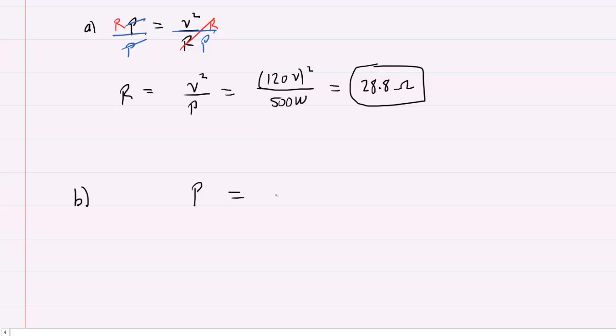We know that power is equal to current times potential difference. Divide both sides by the potential difference, so current equals power divided by potential difference. Let's plug in 500 watts for power and 120 volts for potential difference. Computing this gives us 4.17.